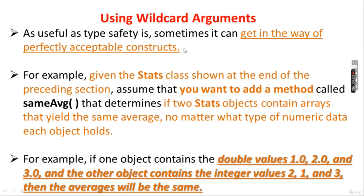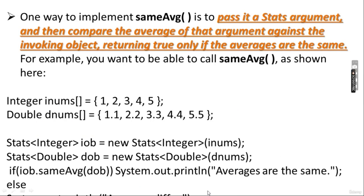Now, using wildcard arguments: as useful as type safety is, it can sometimes get in the way of perfectly acceptable constructs. Given the Stats class, assume you want to add a method called sameAverage() that determines if two Stats objects contain arrays that yield the same average, regardless of what type of numeric data each object holds.